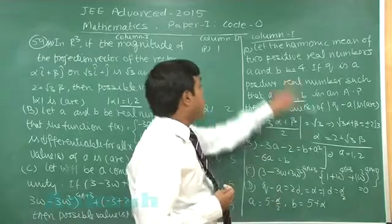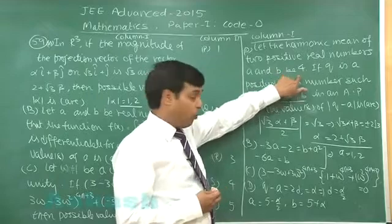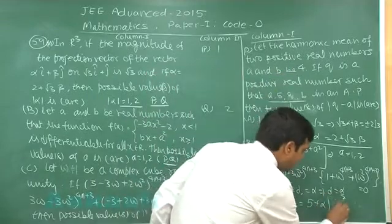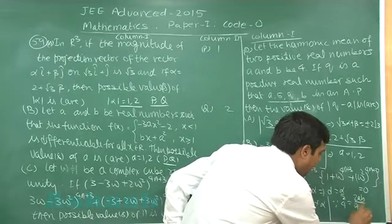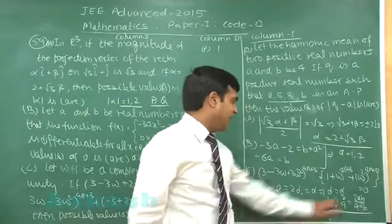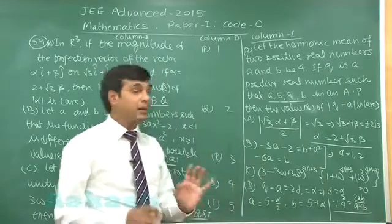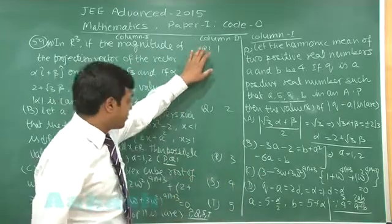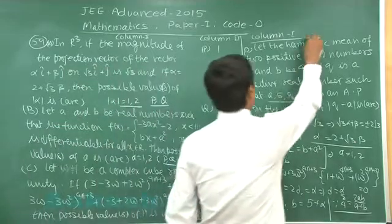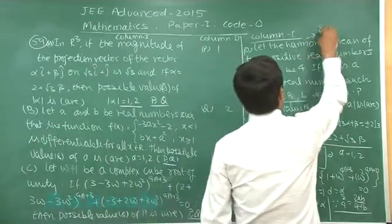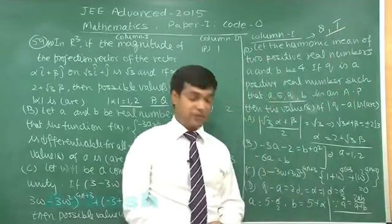Since A and B are obtained in terms of alpha, and the harmonic mean is 4 (meaning 4 equals 2AB divided by A plus B), we substitute A and B in terms of alpha. Solving gives the possible values of |alpha| with these constraints, and from the four options the correct answers are Q and T.